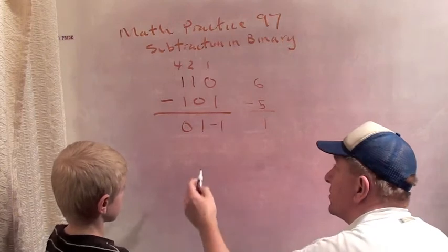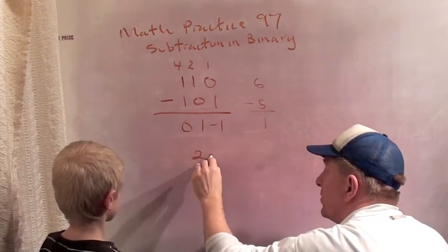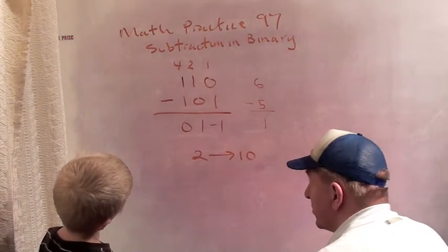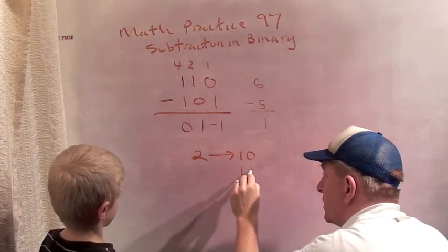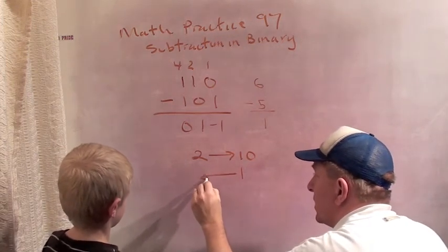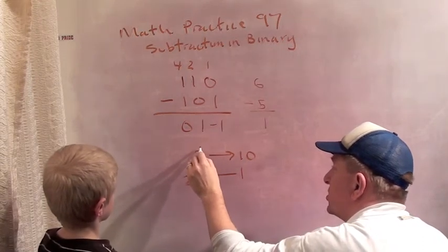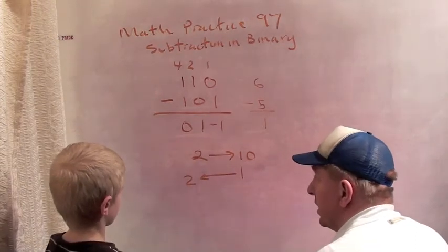We're going to use our rule in reverse. Our rule when we were adding was that a two became a 10. Our rule in subtracting is that a one is going to become a two. But shifting over, this two shifted over one, this one's going to shift backwards one.